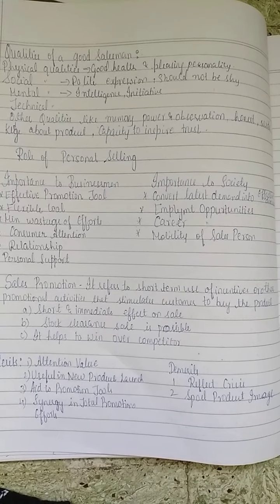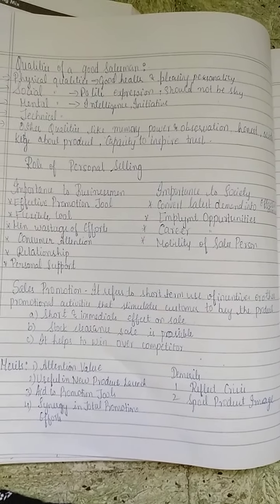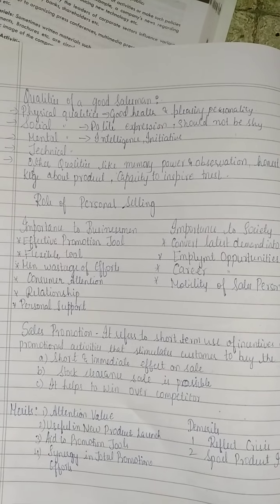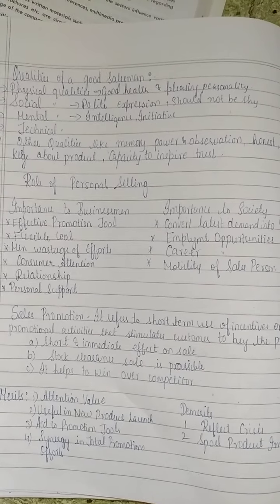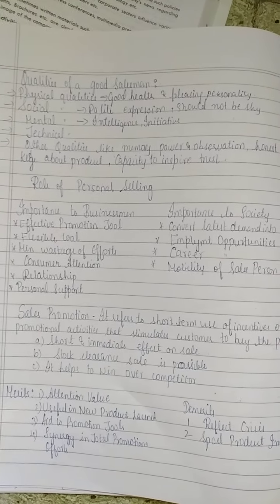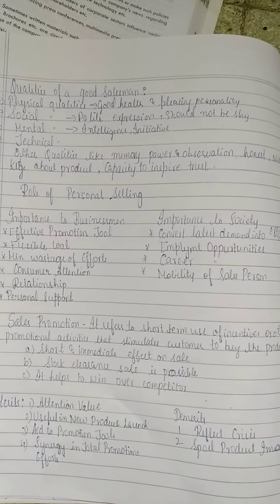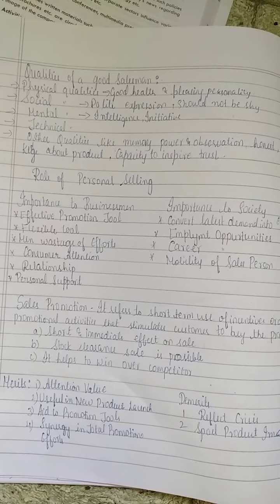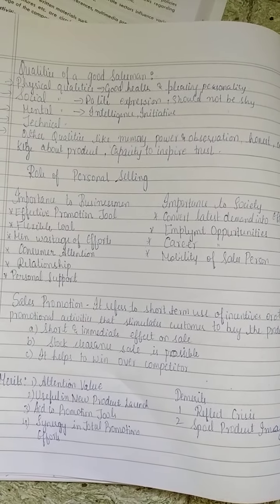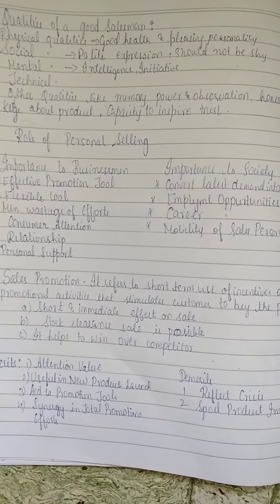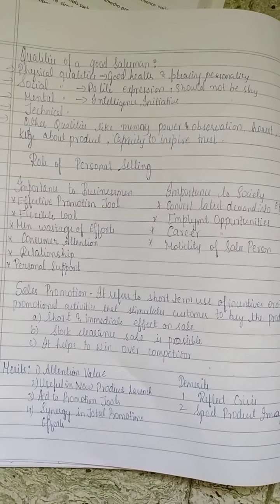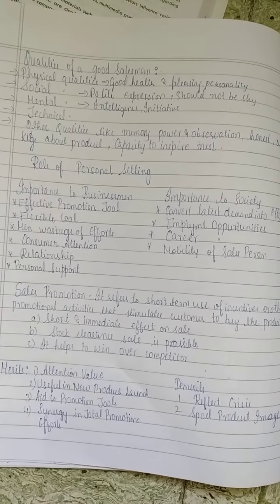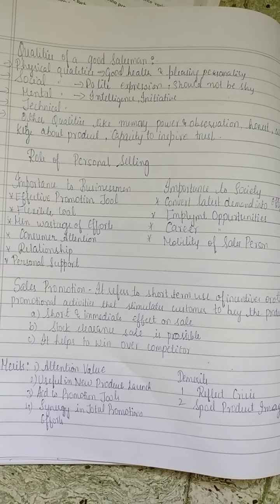Qualities of a good salesman: he should have physical qualities and a pleasing personality. He should be sociable and able to recognize people. He should not be shy. Mental qualities: he should be intelligent enough to take initiative in answering questions. He should know all the technical qualities related to the product. Other qualities include memory power, observation, honesty, and wide knowledge about the products.